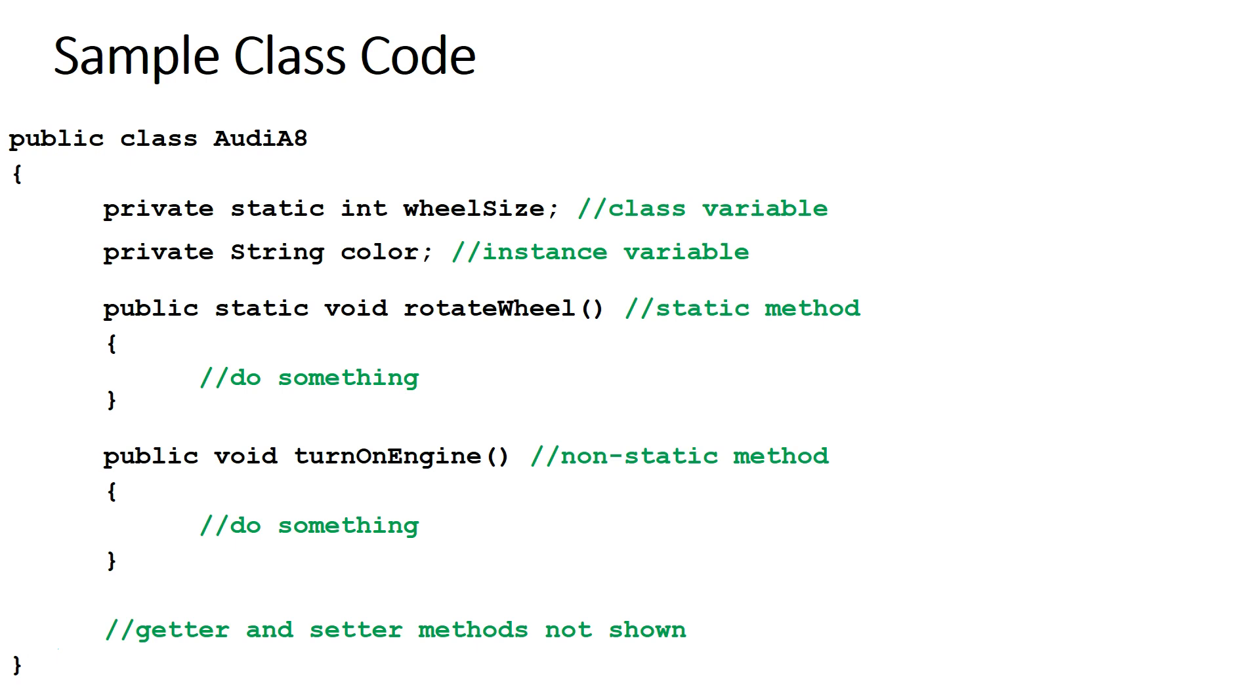Here are some sample class code. So for our class, Audi A8, we've got private static int wheel size. This is a class variable. It belongs to the class. This is an instance variable. It belongs to the instance: private String color.